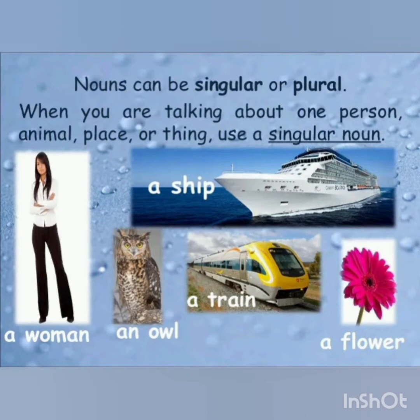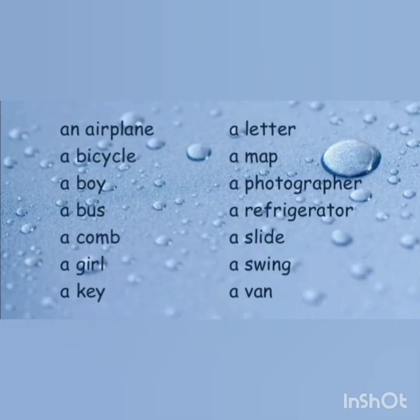For example: a ship, a woman, an owl, a train, a flower. Here are some more examples of singular nouns: a letter, a map, a boy, a girl, and many more.